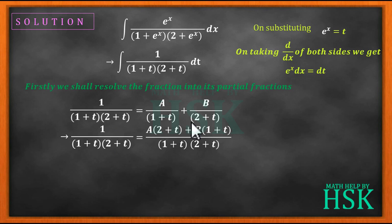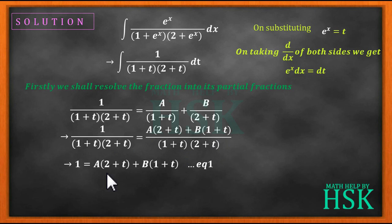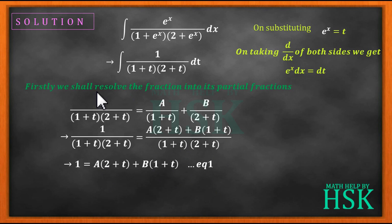Taking the LCM of the right-hand side, we get A(2 + t) + B(1 + t) over (1 + t)(2 + t). The denominator cancels, giving us 1 = A(2 + t) + B(1 + t). This is equation number 1, from which we will solve for A and B.